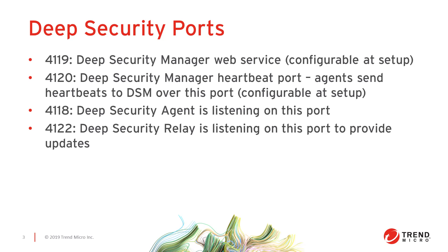There are four main port numbers used by the on-premise Deep Security platform. The Deep Security Manager has two main ports that can be configured during setup. By default, port 4119 is used for accessing the Deep Security Manager web service, and port 4120 is listening for agent heartbeats. The Deep Security Agent is listening on port 4118 for manager-to-agent communication. The relay server, where agents connect to download updates, is listening on port 4122.